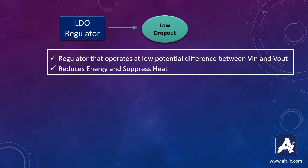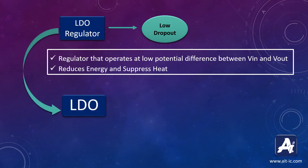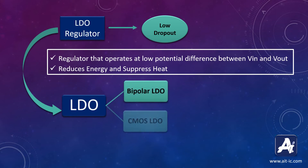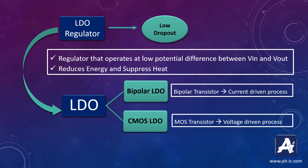AIT offers two kinds of LDOs: Bipolar LDO and CMOS LDO. Bipolar LDOs are generally made up of bipolar transistors and CMOS LDOs are built using CMOS technology. Both have their individual benefits as per application requirement.